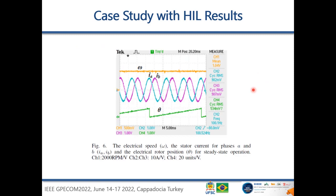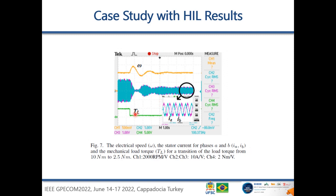Moving to the results, shown here for case one — case two had similar results. The first result shows the machine speed, stator current for phases A and B, and the theta signal (rotor position) in steady state, all performing well. Applying transitions: a load torque step from 10 Nm to 2.5 Nm is applied. The speed remains controlled at the same reference even after the torque change, and the current decreases as expected after the load reduction.